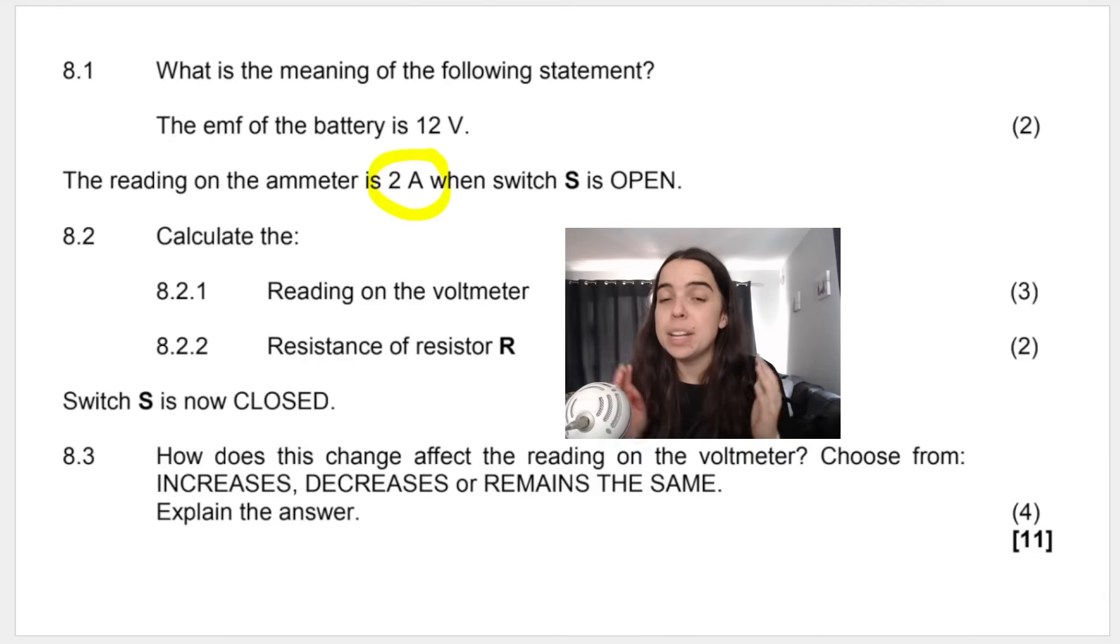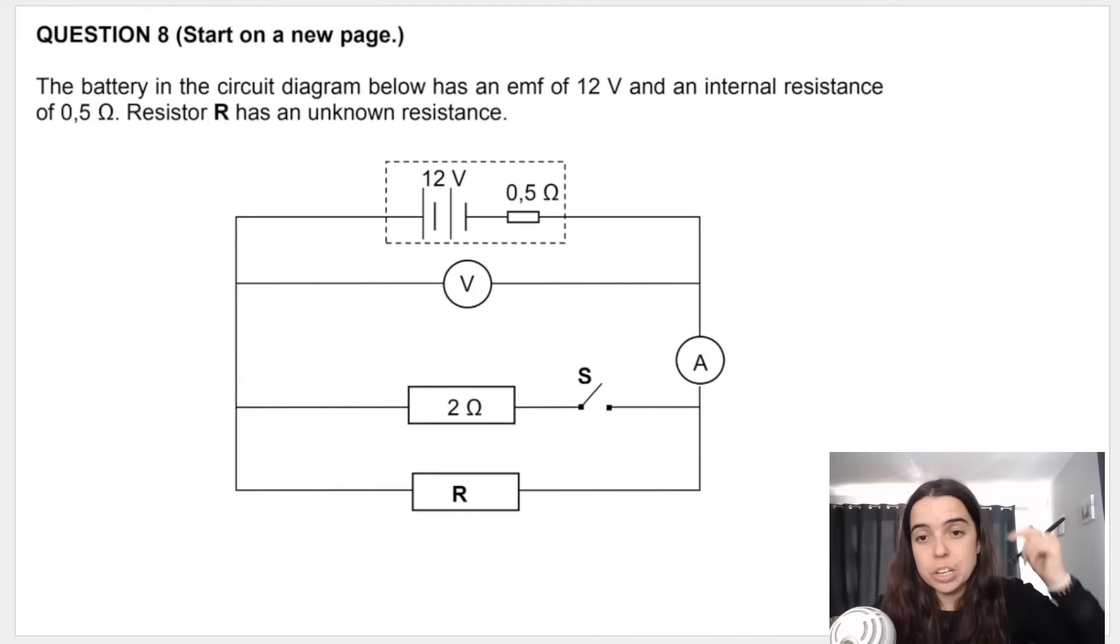Lastly, we've got an explanation question. Now, grade 11s and 12s, look at how many marks this question is. It's worth four marks. You cannot lose these marks. And also, if you know what you're doing, it's really easy. So they say that switch S is now closed. How does this affect the reading on the voltmeter? You have to choose from increases, decreases, or remains the same. So obviously, you have to choose one. So that would be one mark. And then explain the answer. That would be three marks. So switch S is now closed. If we close the switch, that is basically what the question is saying. We close the switch. The implication of that is that we now have two resistors in parallel.